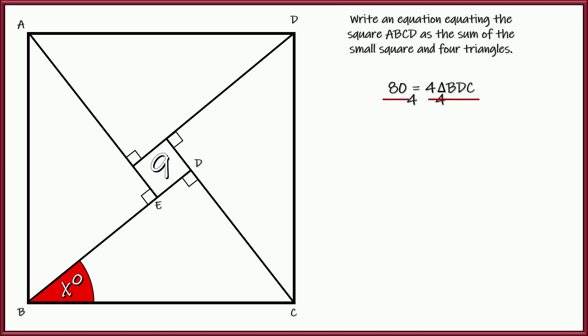So we're going to get that the area of triangle BDC is, of course, 20 square units, whatever those happen to be. Now, let's go ahead and write our formula for the area of a right triangle, one-half base times height. And we can go ahead and get rid of that one-half. So 40 is equal to the product of the base times the height.